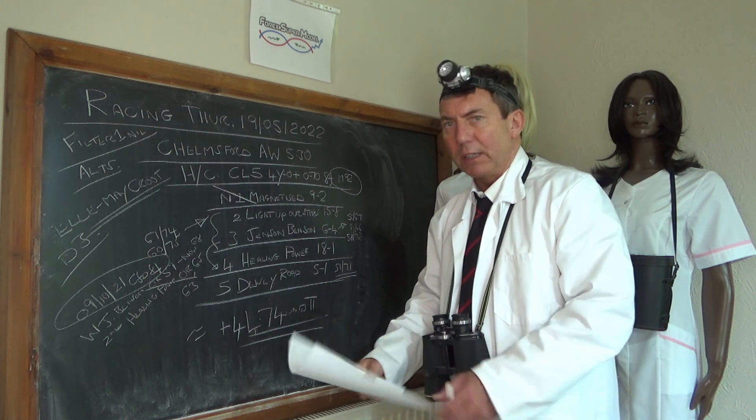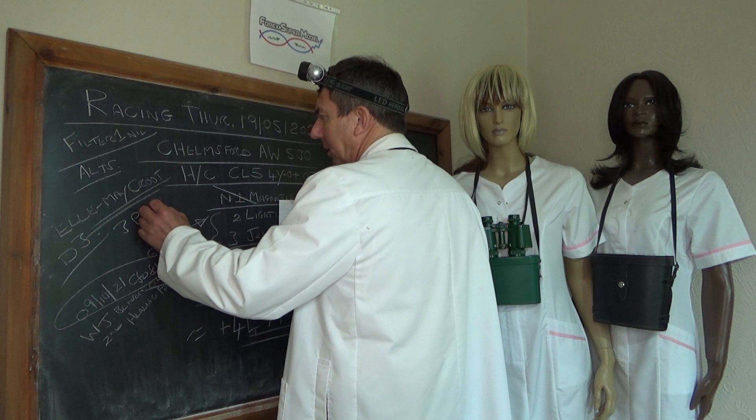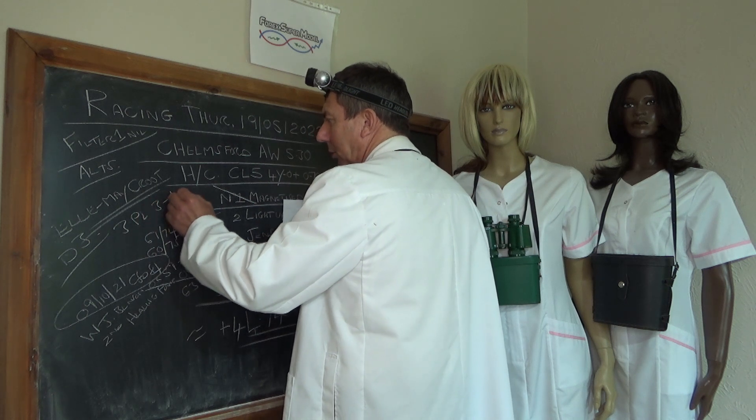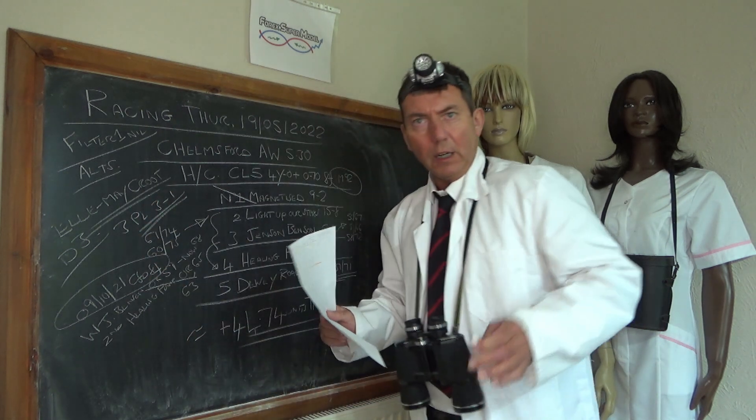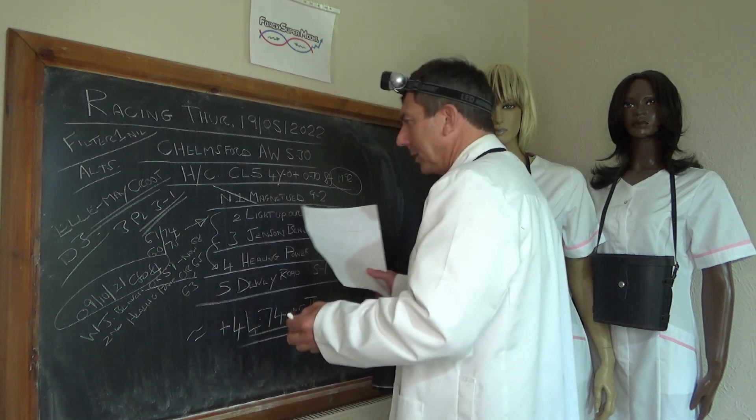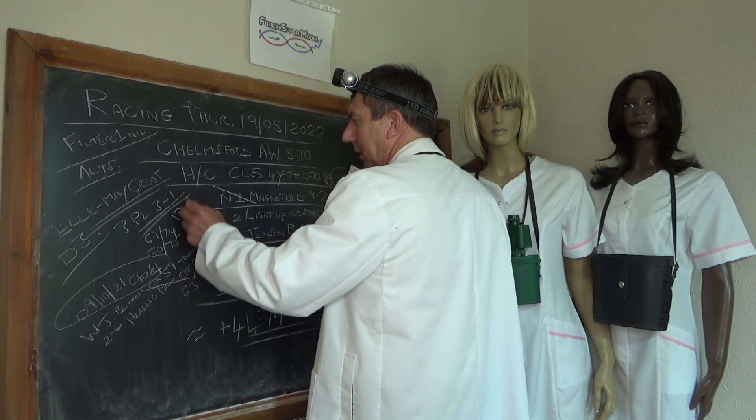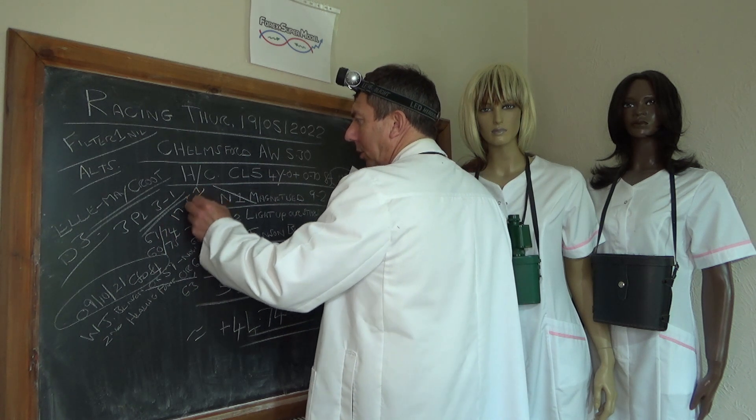And we've managed to get three places on the exchanges at an average of three to one, which is our sort of hedge situation if you like. And then we've gone for the win, and we've got a win at 17.5 to one, 17.5 average to one on the win.